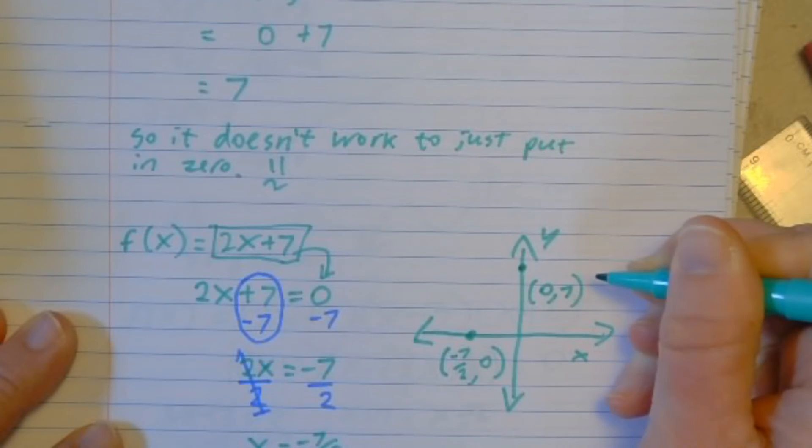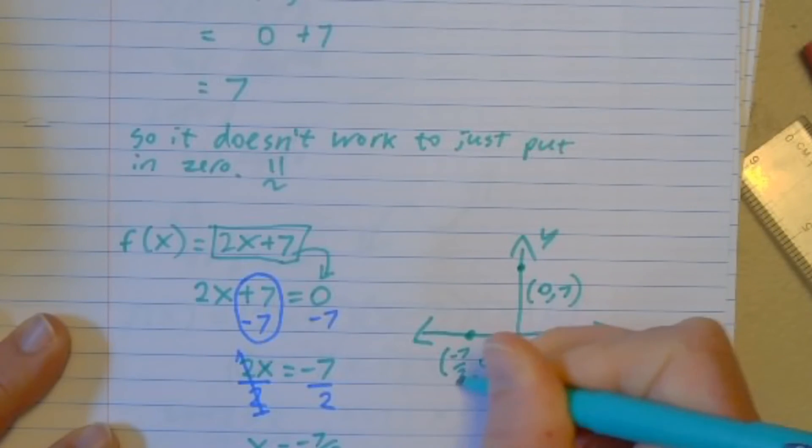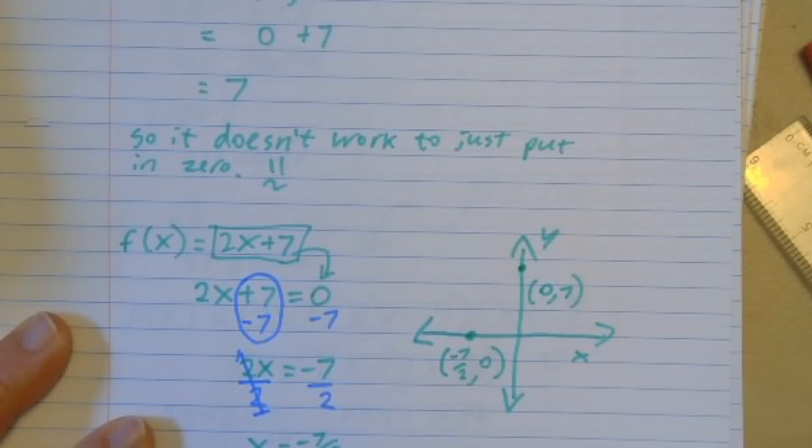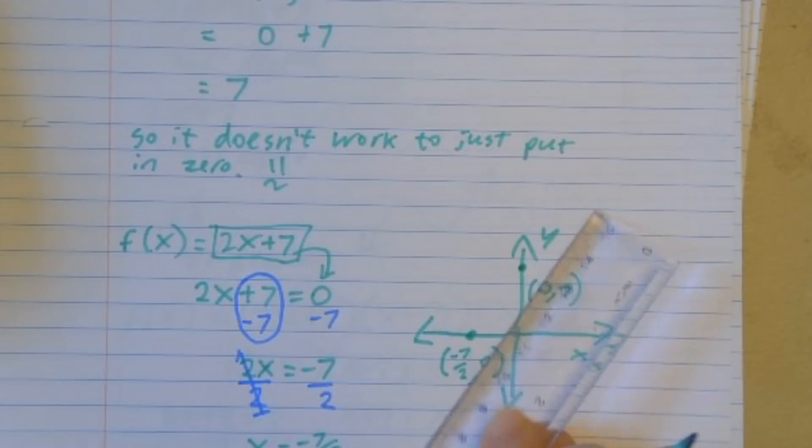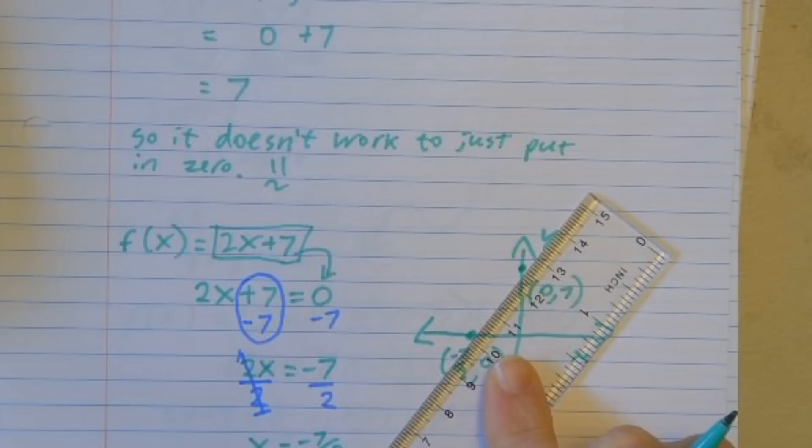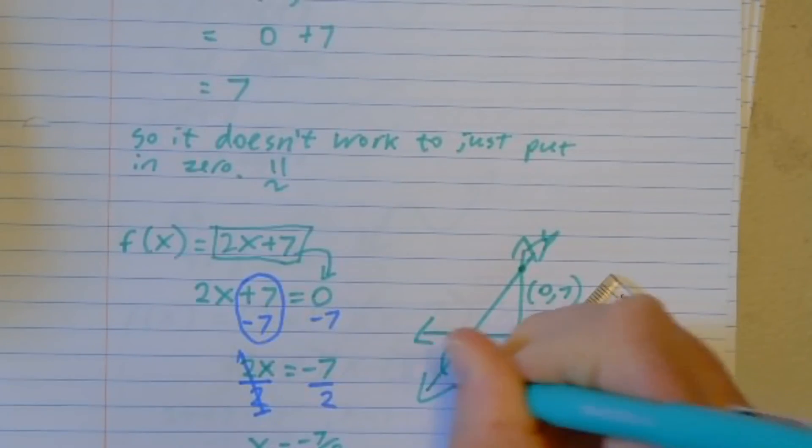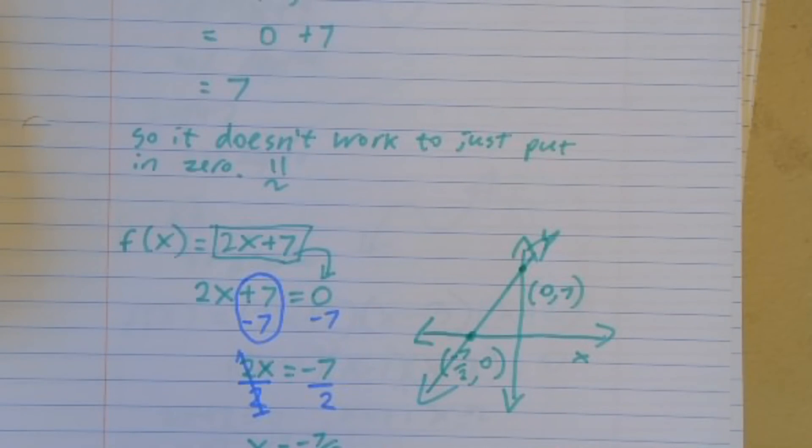That would be my y-intercept. I put in negative 7 halves, I get out 0. That would be my x-intercept. So those are two different kinds of zeros. And since this is linear, it would be a line. And that would be a sketch of the graph of this function using the zeros.